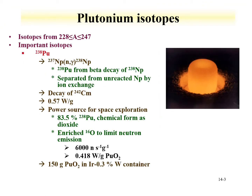We'll start off the lecture discussing the different isotopes of plutonium. There are isotopes from as low as 228 to as high as 247. Some of the important isotopes include plutonium-238, which is made from the neutron capture of neptunium-237, producing neptunium-238. That beta decays to produce plutonium-238. This was the route by which plutonium was identified. This relatively short-lived alpha-emitting plutonium-238 has a high specific activity and is relatively easy to observe.